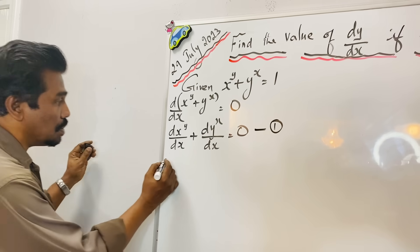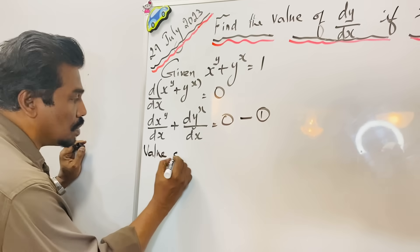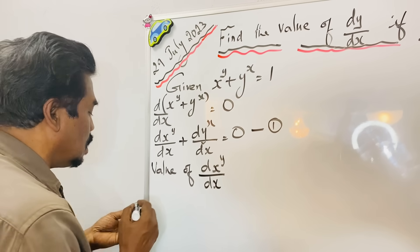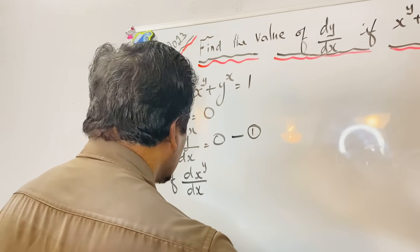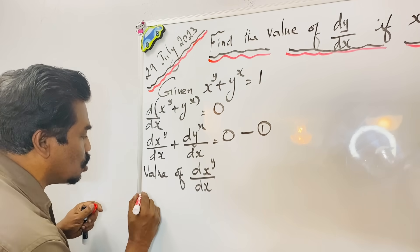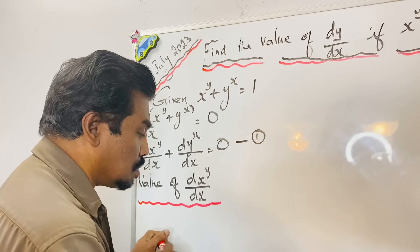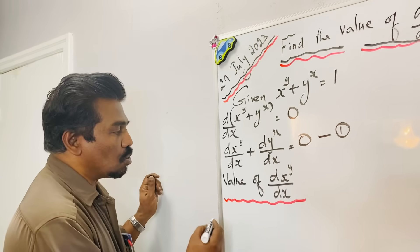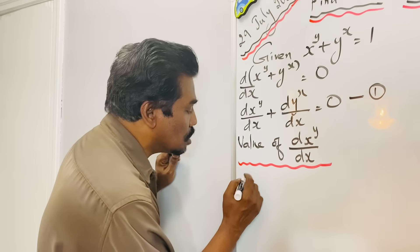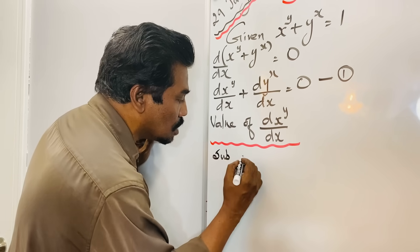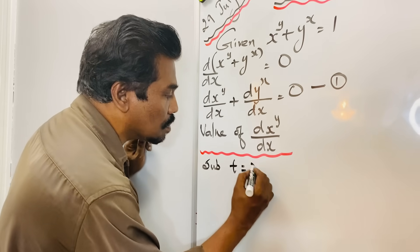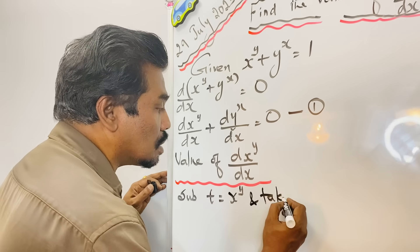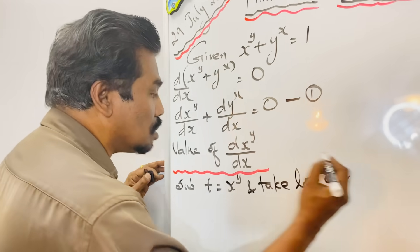Now we can find the value of d(x^y)/dx, and later we will find the value of d(y^x)/dx, then add them together. For this purpose, we have to make a small substitution which is most common in calculus and differential equations. Substitute t equal to x power y, and take log on both sides.